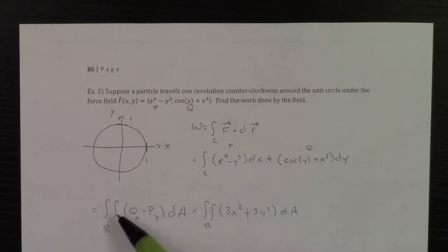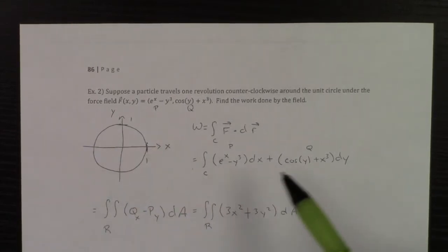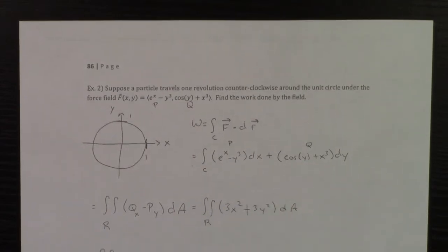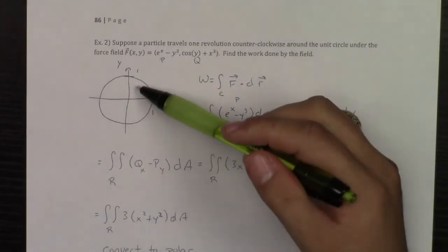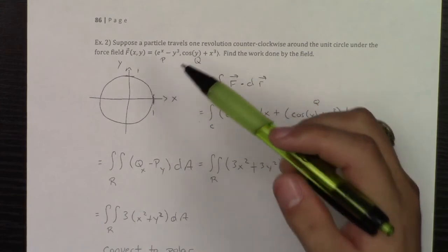And Green's theorem says I can do the double integral of that region of qx minus py, which, if you look at this, comes out to 3 times x squared plus y squared, which, because my path is circular, let's convert this into polar.